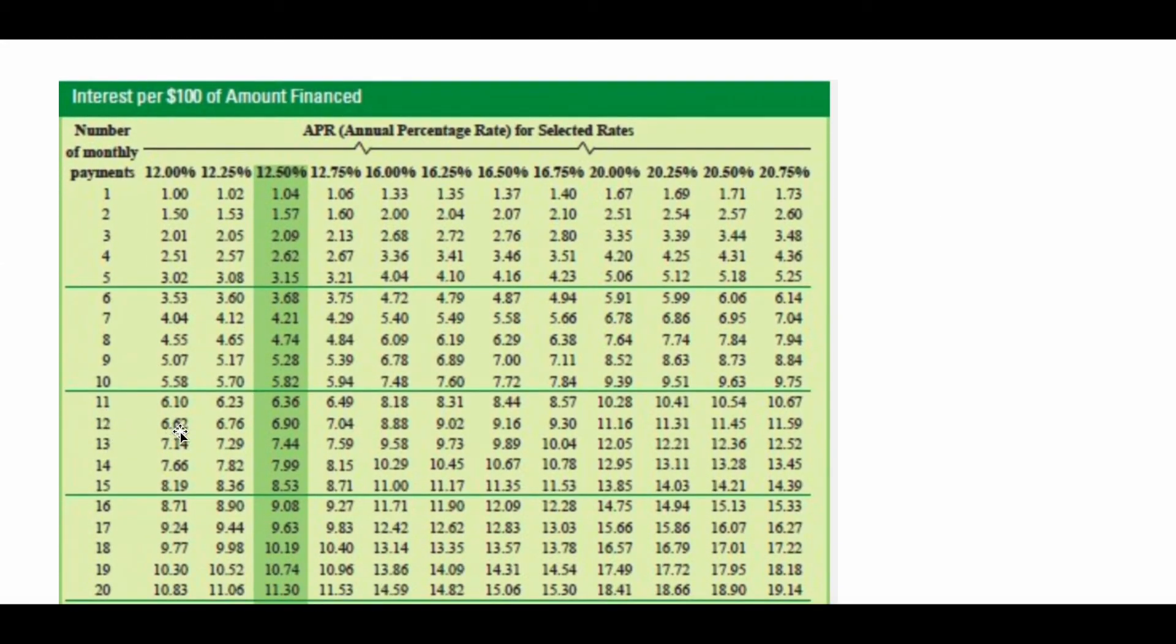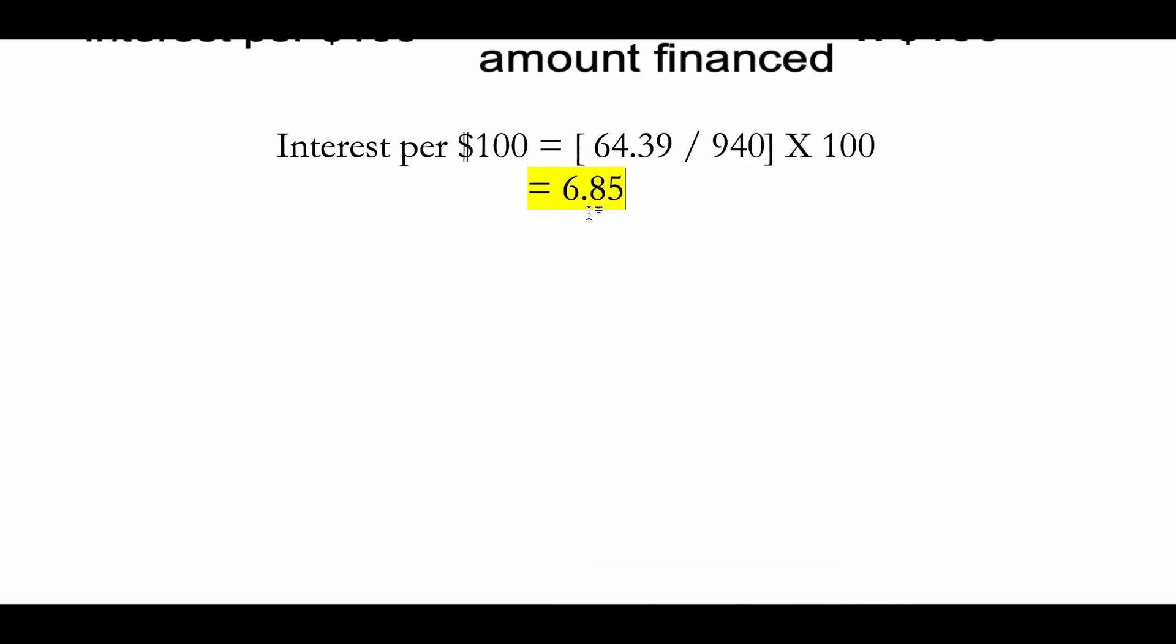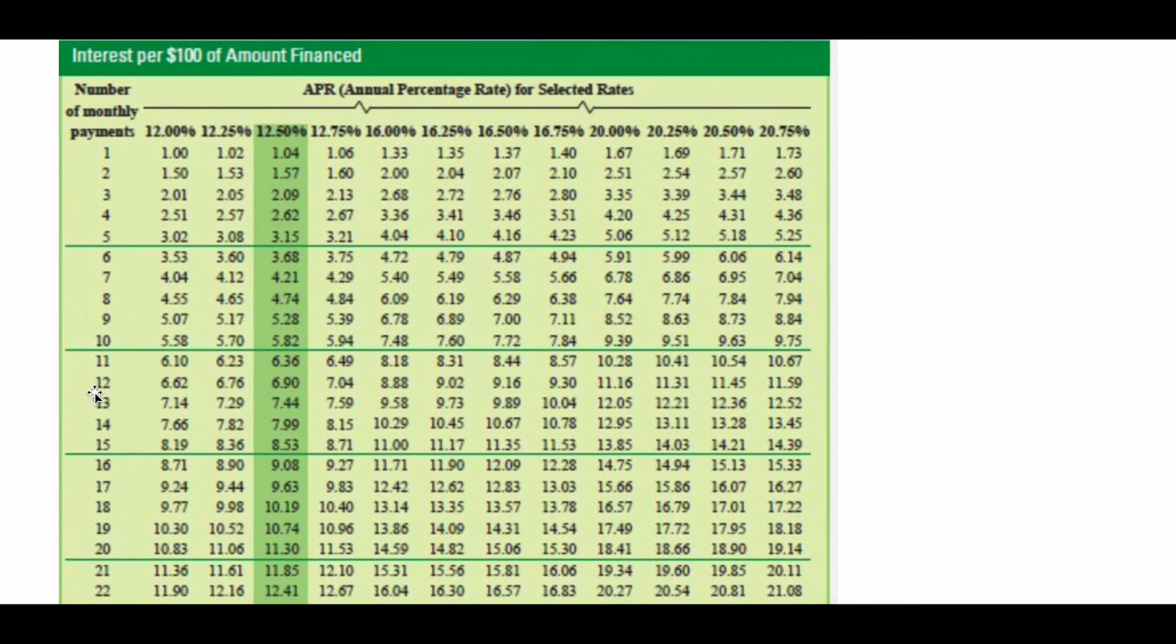Then you're going to slide to the right and find the value closest to 6.85. So here is my 12th month. 6.85, the closest number appears to be 6.90.